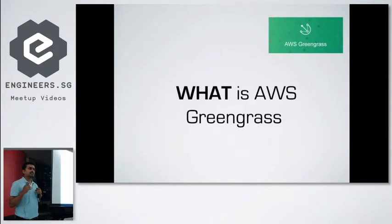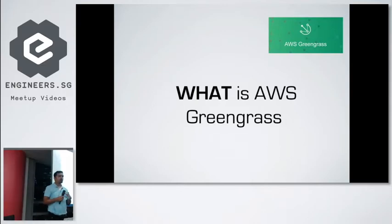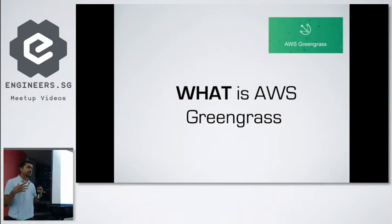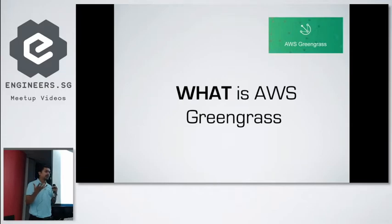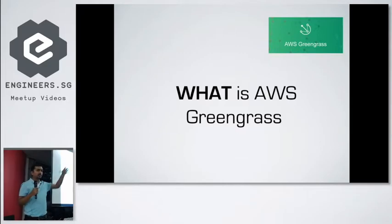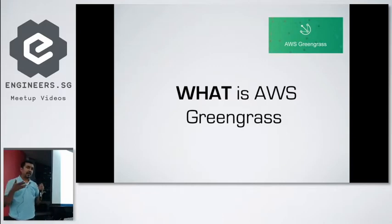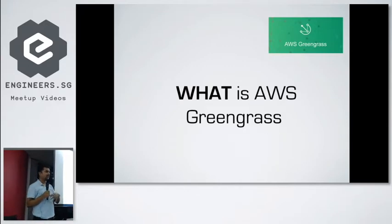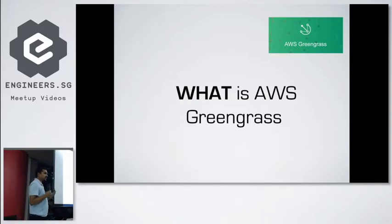AWS Greengrass is basically for edge computing. IoT is all about connecting your sensors. When sensors are generating a lot of data and some critical decision has to be taken at the point where the data is generated, sending data to the AWS cloud takes too long. For example, with a Tesla car, if an accident is about to happen, you have to take the decision right there — you can't send data to cloud and come back to decide whether to apply the brake or not.